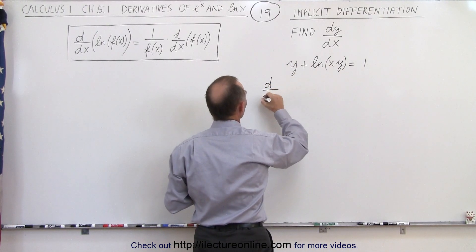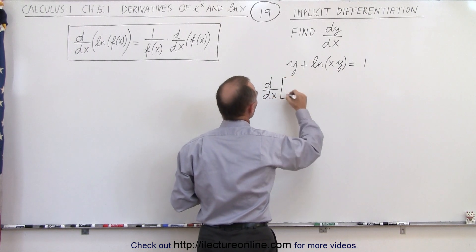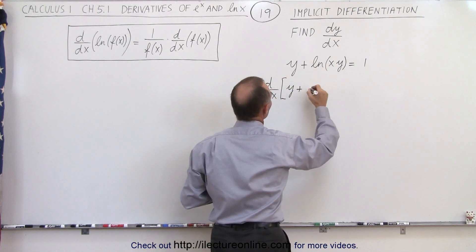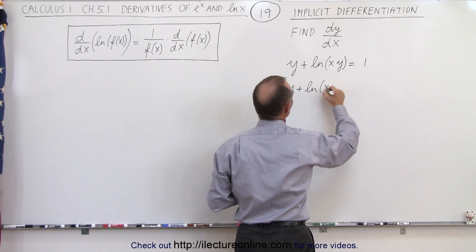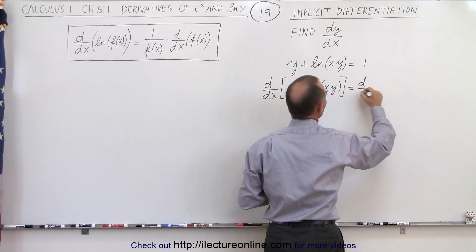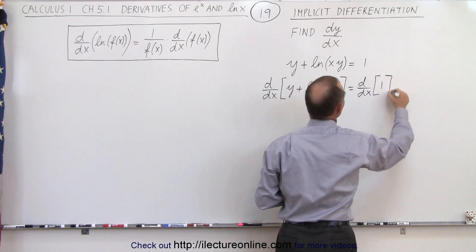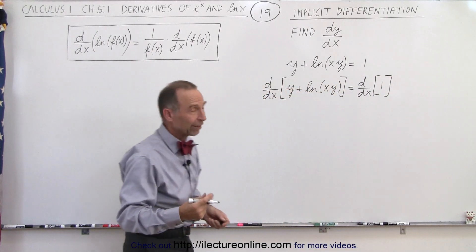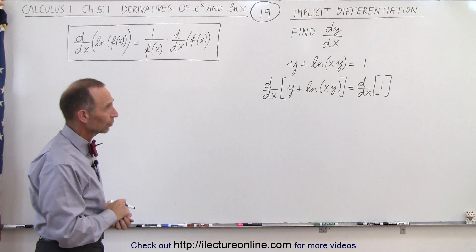So we can say that the d/dx of the left side, which would be y plus the natural log of xy, is equal to the d/dx of the right side, in this case which is simply equal to 1. And of course the derivative of the right side clearly is going to go to 0.